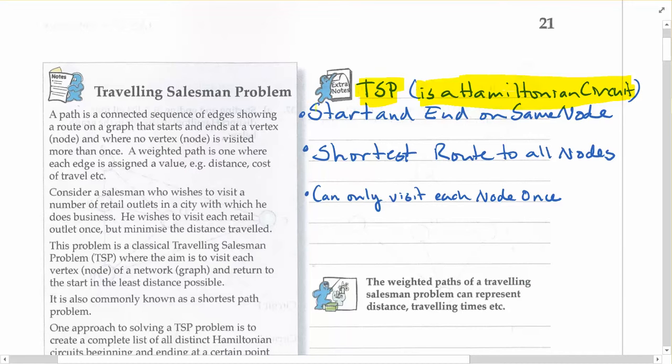We've got a few criteria that we need to remember. Like a Hamiltonian circuit, it's going to start and end on the same node. Similar to a Hamiltonian circuit, you can only visit each node once. And now we have a third requirement: it's going to be the shortest route to all the nodes. So it's going to be the shortest possible distances, or the shortest possible time, whatever you're actually measuring between all the different nodes.